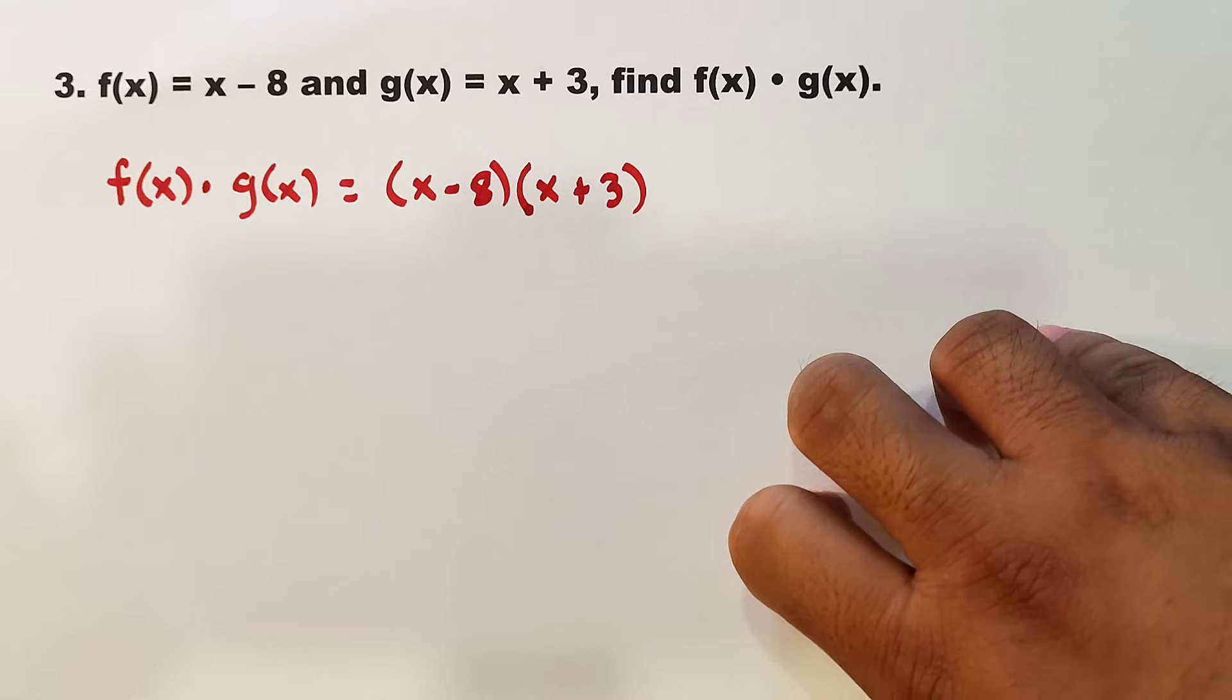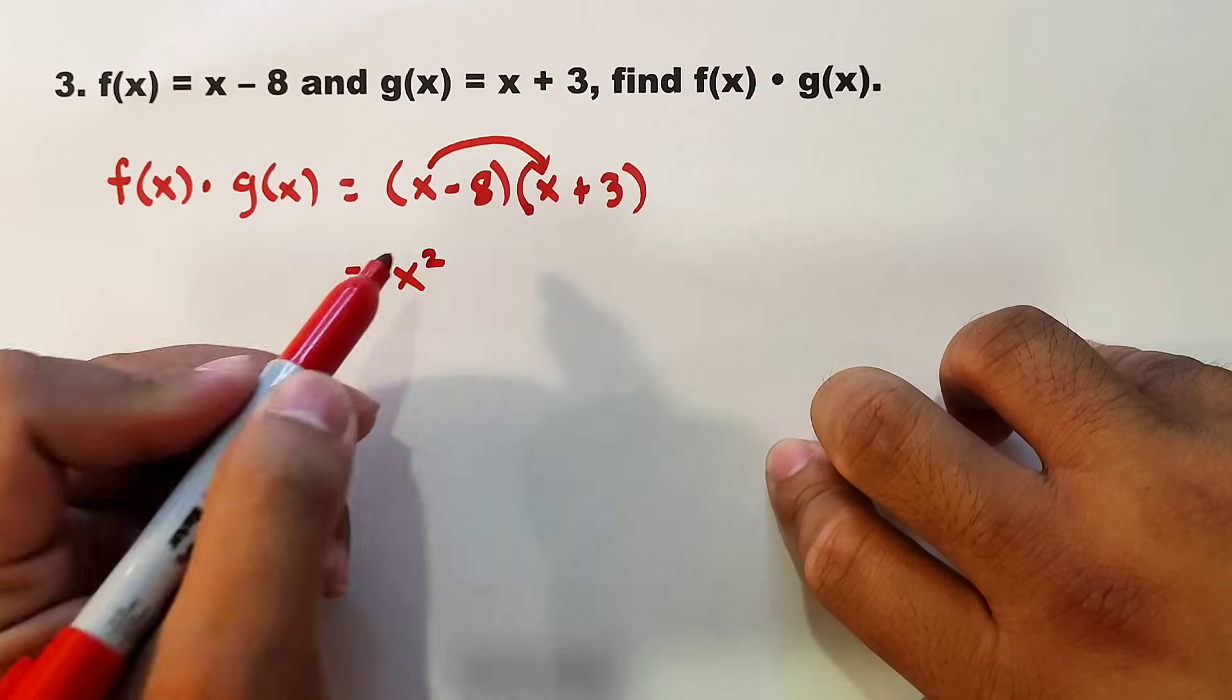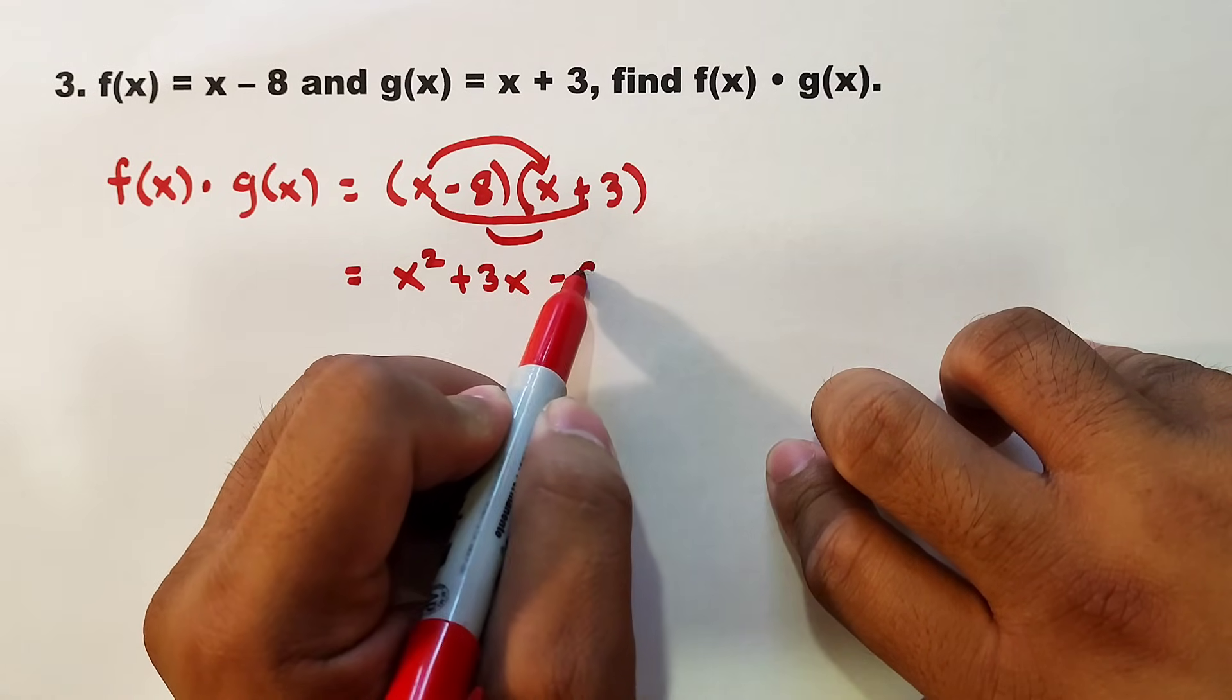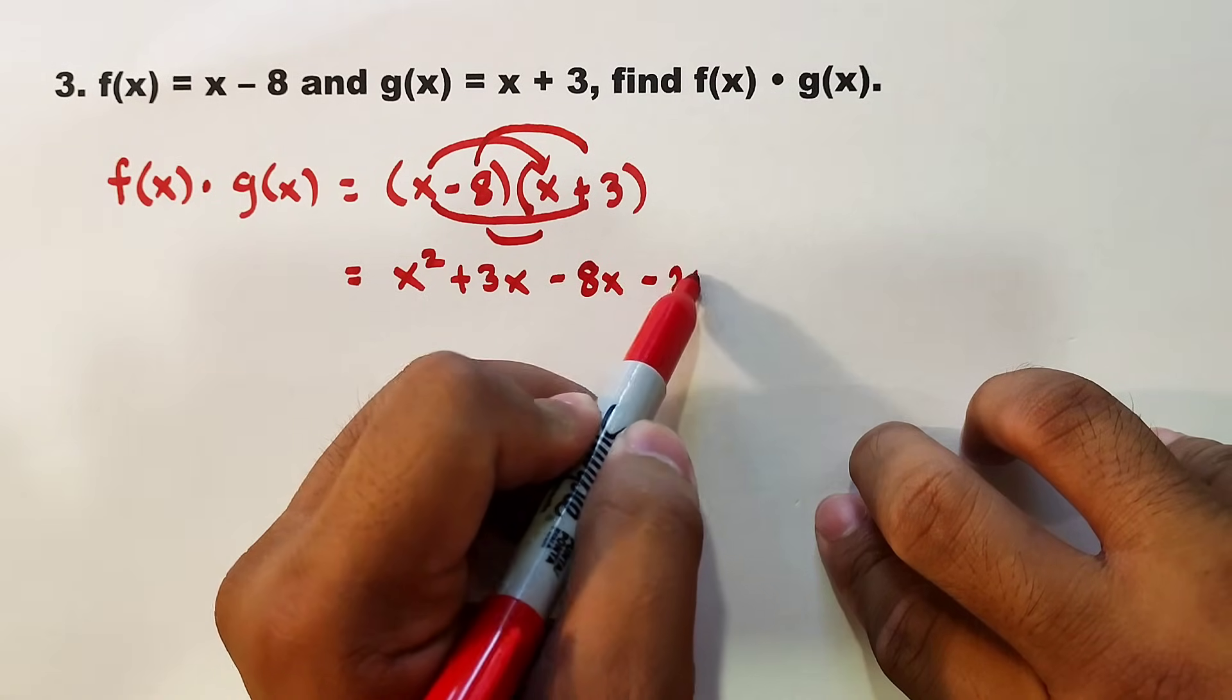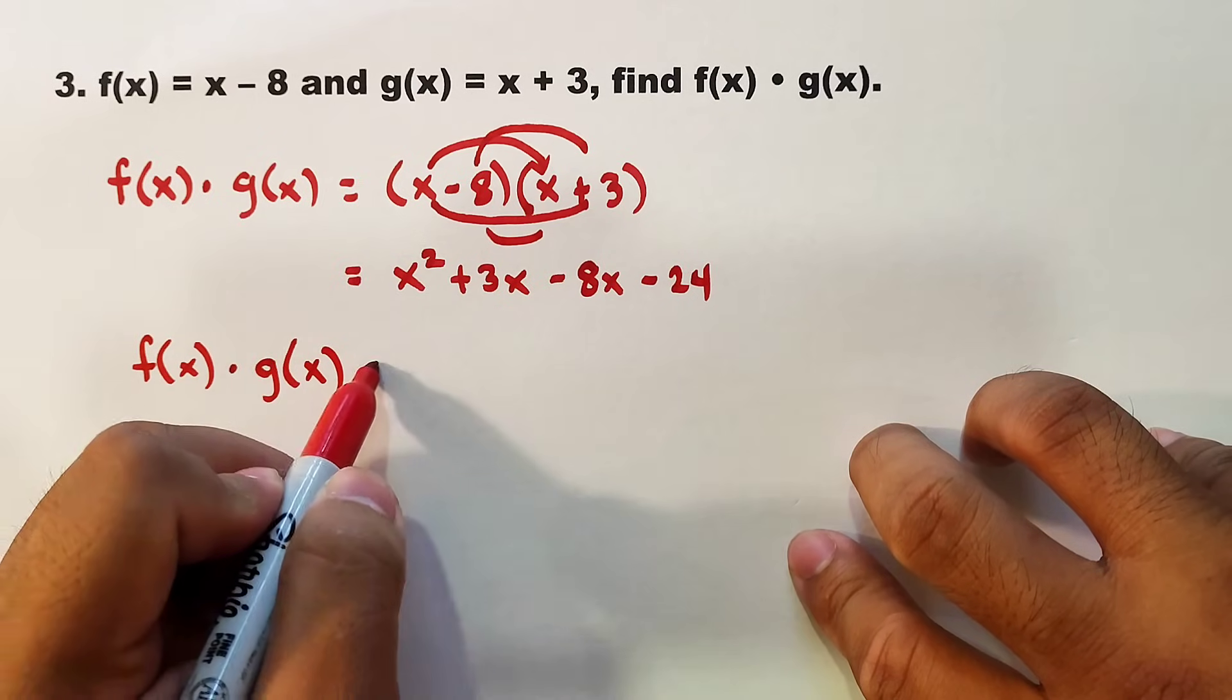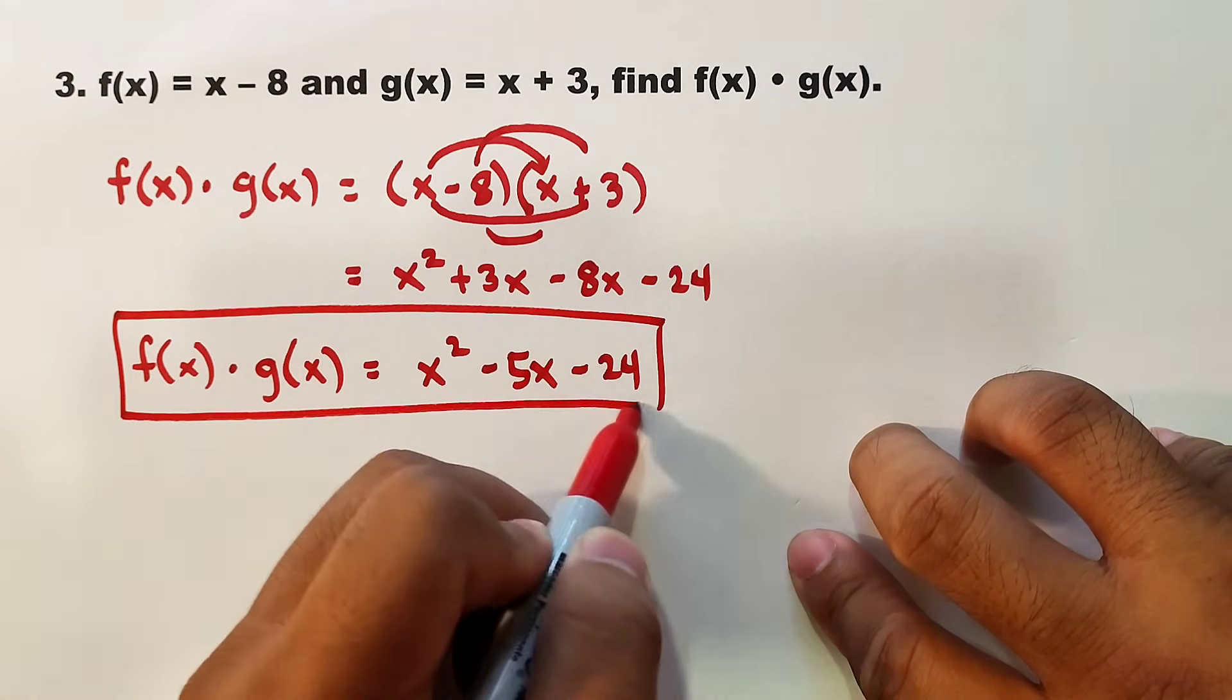Since both are binomials, you can use FOIL method. Your x times x is x². Next, x times 3 is +3x, followed by -8 times x, which is -8x. The last is -8 times 3, which is -24. Combine like terms. Your f(x) · g(x) = x² + 3x - 8x - 24 = x² - 5x - 24. This is the product of the two given functions.